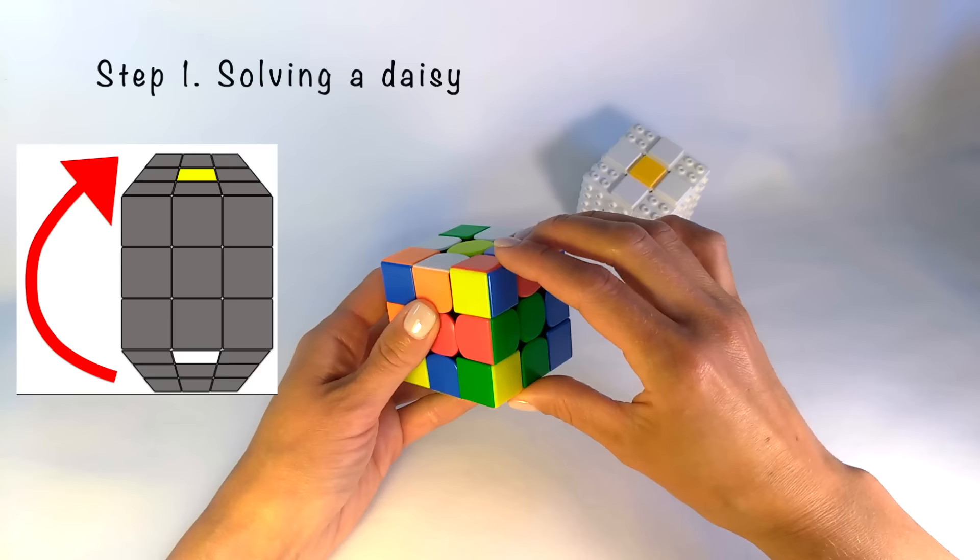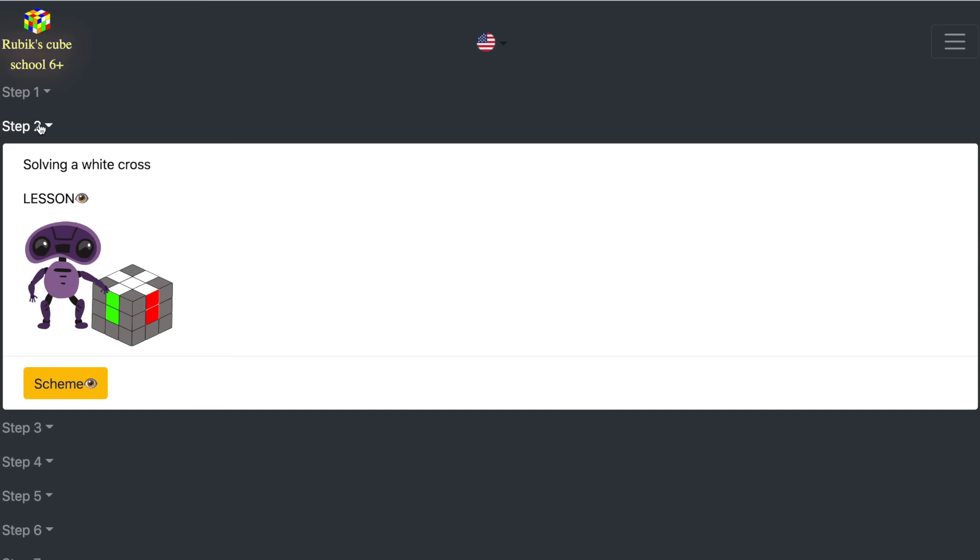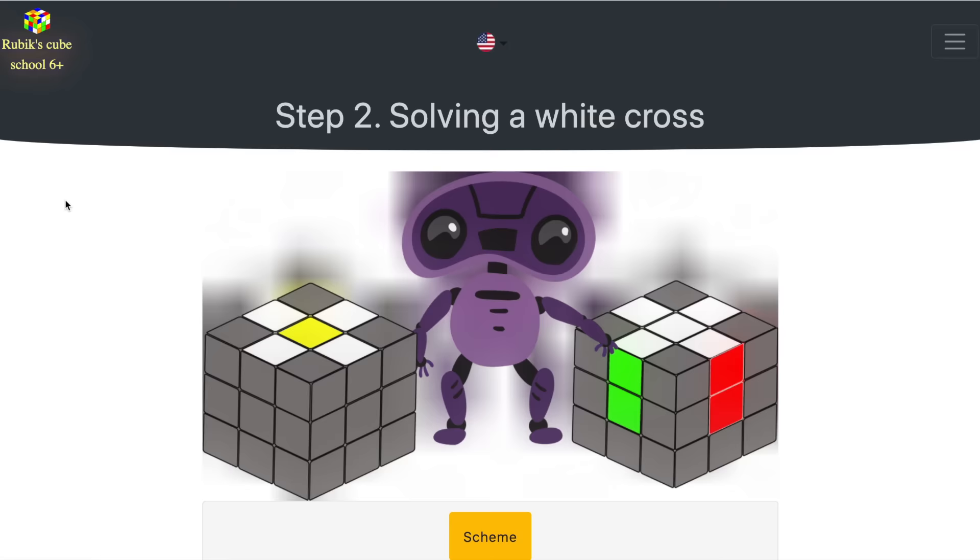So the first stage is completed. Simply, right? See you in the next lesson. Rubik's cube kids dot com. Step two. See you again.